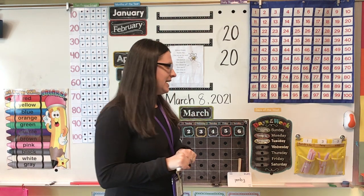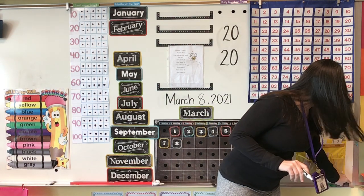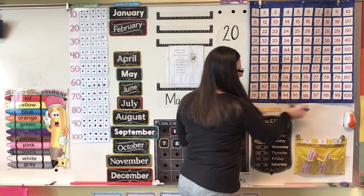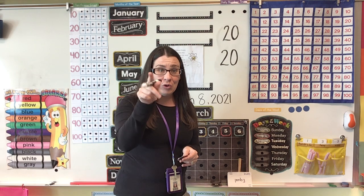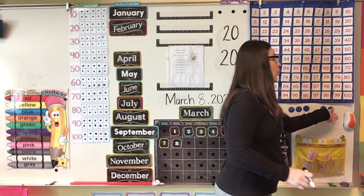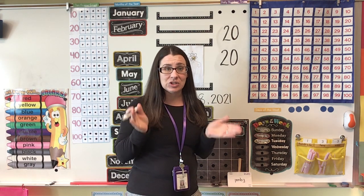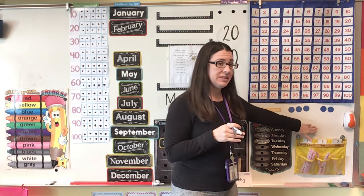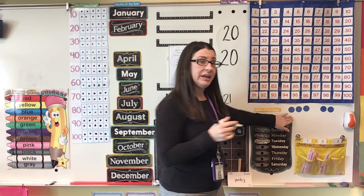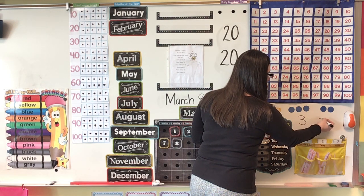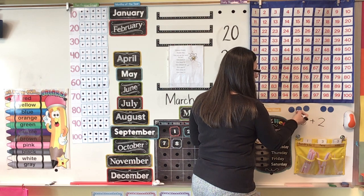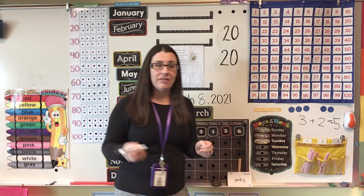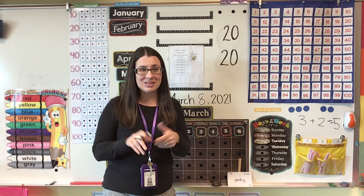We're going to do a story problem today. Let's say that I had three circles, and then you gave me two more. How many circles do I have now? We're going to add these two sets together to get our answer, our sum. I had three, and then you gave me two more, and we're going to add those together — one, two, three, four, five. So three plus two equals five. I now have five circles. Very good, friends.